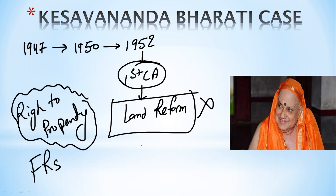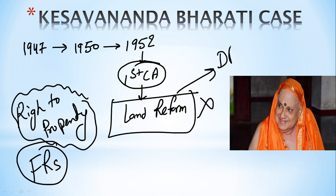On the basis of this conflict, the Kesavananda Bharati case was designed. The first constitutional amendment and land reforms are the foundation of this case. So basically, in the Kesavananda Bharati case, the overall question was: can the government take away fundamental rights in order to bring land reforms? Land reform is a part of DPSP — Directive Principles of State Policy.